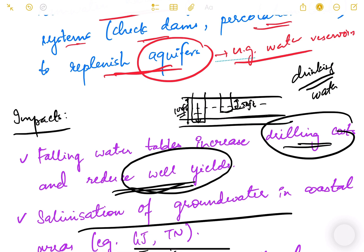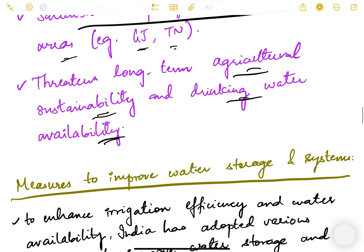It threatens long-term agricultural sustainability and drinking water availability. Groundwater is also a major source for drinking water, not just irrigation water. If we don't have water to drink, which is the primary use of water, then where will we get water to do irrigation or agricultural or industrial activity? Very critical position of this groundwater depletion.